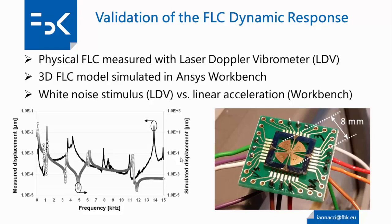Since we are in different conditions in simulation versus measurement, this graph is mainly a way to see how well the model predicts the resonant modes and the frequencies at which the device resonates. The amplitude of displacement is not directly comparable between the two scenarios. It is interesting to see that the model predicts quite accurately the modes occurring in the low-frequency range, from about 200 Hz up to a few kilohertz. Since we are aiming at environmental vibrations below a few kilohertz, this preliminary comparison is quite satisfactory.